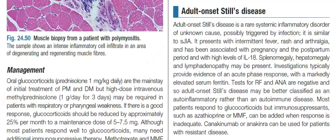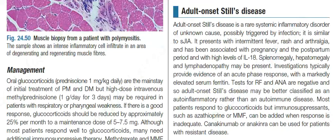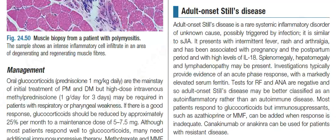Adult onset Still's disease is a rare systemic inflammatory disorder of unknown cause, possibly triggered by infection. It is similar to systemic juvenile idiopathic arthritis. It presents with intermittent fever, rash, and arthralgia, and has been associated with pregnancy and the postpartum period, and with high levels of interleukin-18. Splenomegaly, hepatomegaly, and lymphadenopathy may be present.